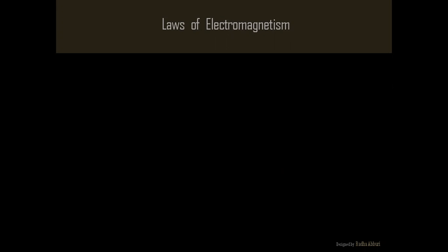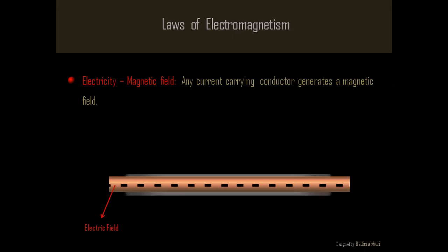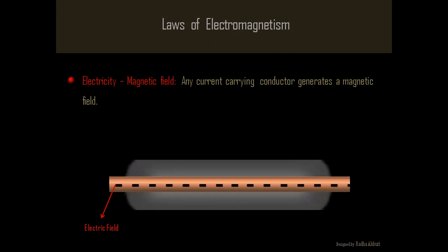The first law states that whenever there is an electric current flowing through a conductor, a magnetic field is developed around it like this.